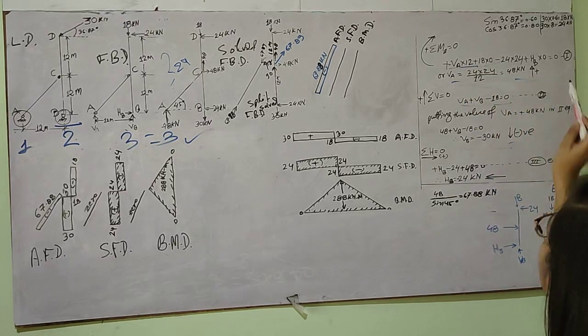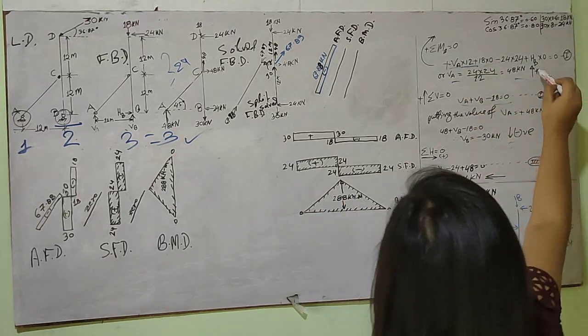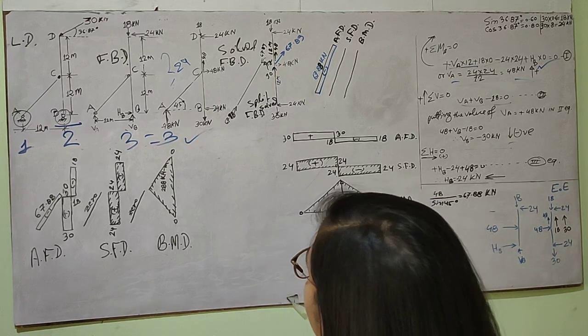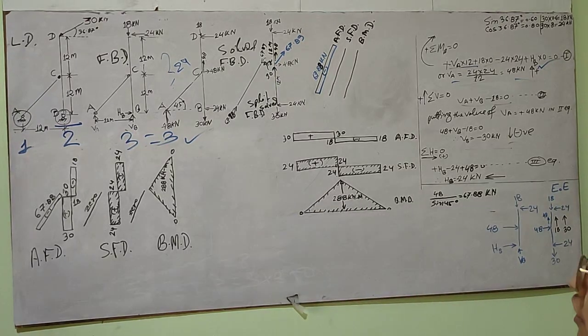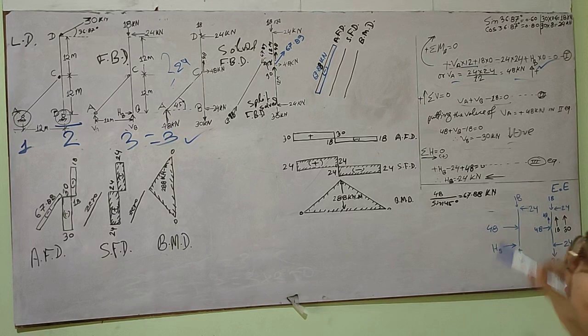HB is acting at the same point, so it will also give zero. I get VA as 48 kilonewtons. My assumption is correct - it is acting vertically upward. Now I need to calculate VB.